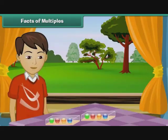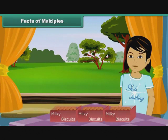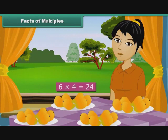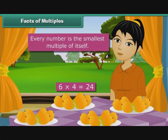Ved buys another box of 4 marbles, expressed as 4 multiplied by 2 equals 8. Prerna buys 2 more packets of 5 biscuits each, expressed as 5 multiplied by 3 equals 15. Rashmi buys 3 more kilograms of 6 mangoes each, expressed as 6 multiplied by 4 equals 24. It is clear from these figures that every number is the smallest multiple of itself.